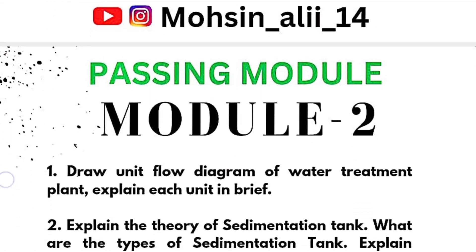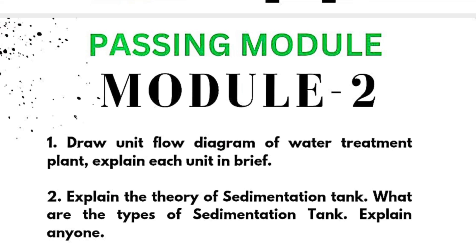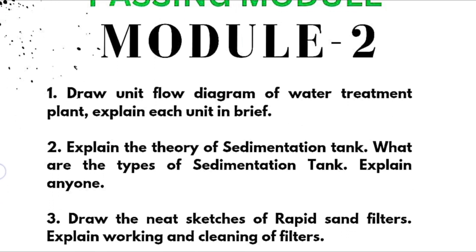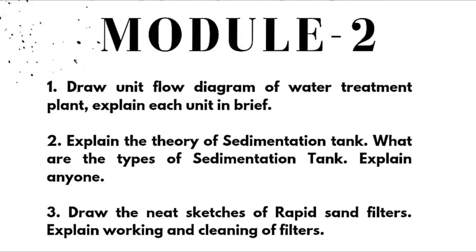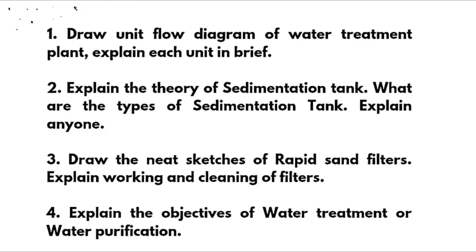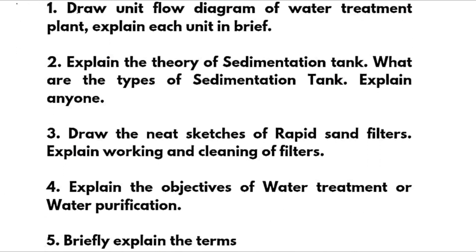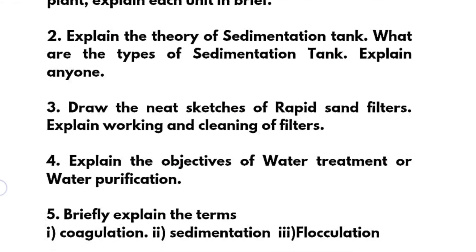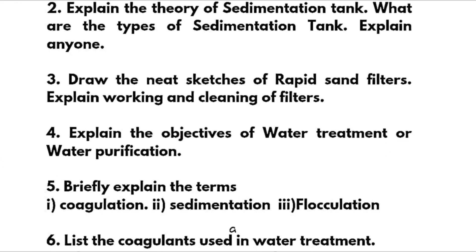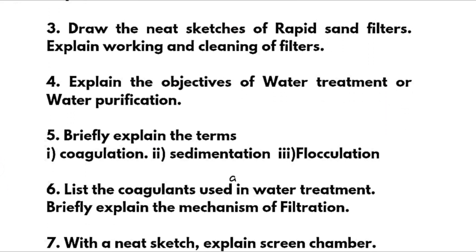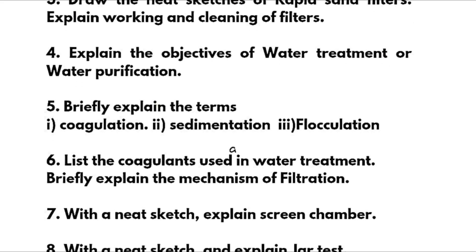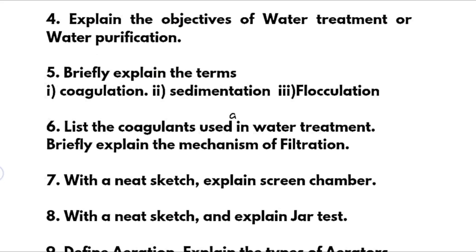Coming to Module 2, which is again a passing module: draw unit flow diagram of a water treatment plant and explain each unit in brief. Explain the theory of sedimentation tank and the types of sedimentation tank — explain any one. Draw neat sketches of rapid sand filters and explain their working and cleaning. Explain the objective of water treatment or water purification. Briefly explain the terms coagulation, sedimentation, flocculation, and list the coagulants used in water treatment.